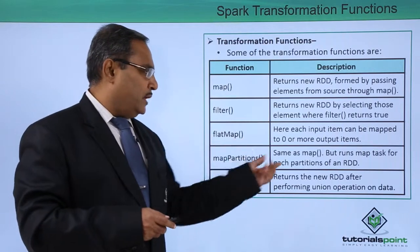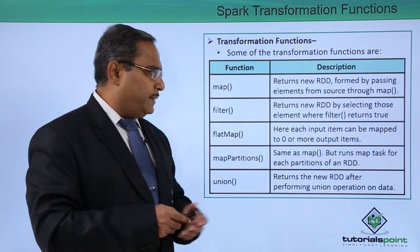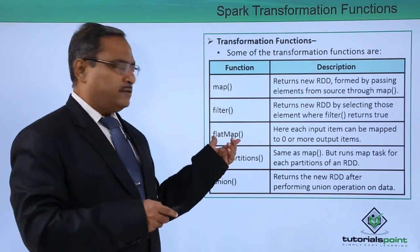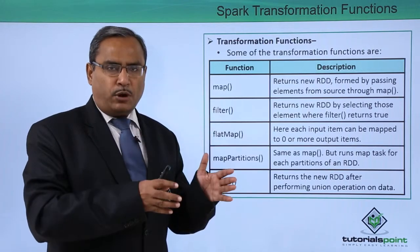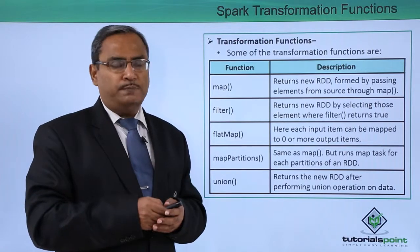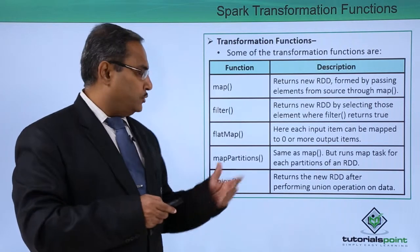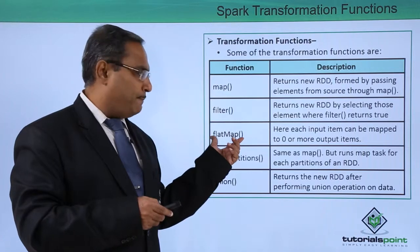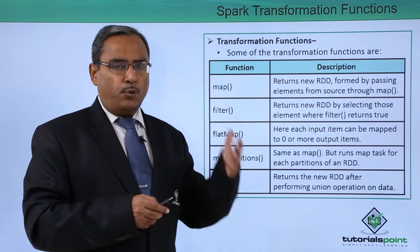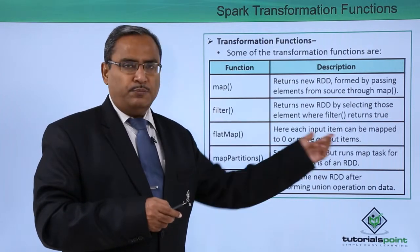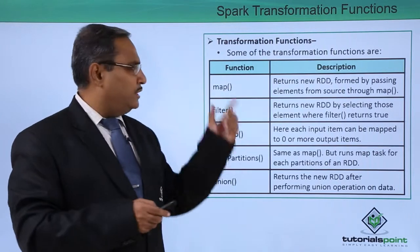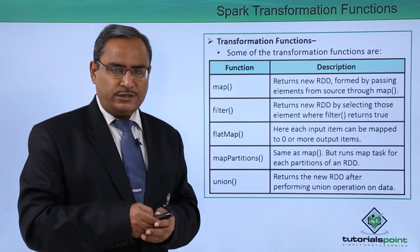Next one is the flat map. Here each input item can be mapped to 0 or more output items. In case of flat map, it will have n number of partitions as input and it can produce 0, 1 or more than 1 partitions as output. That is the basic concept of this flat map method. We are having a separate video on this map and flat map method. You can also watch that one.